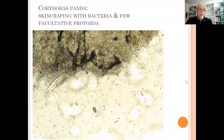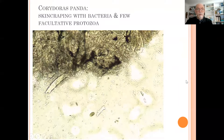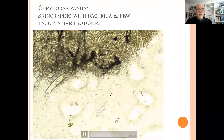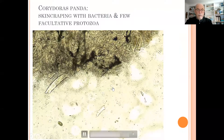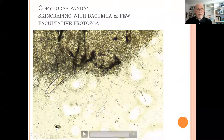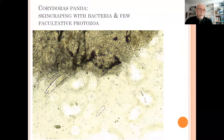We start first with the skin scraping. Here at 100x magnification, we see a few facultative parasites — that means they are not the cause of the problem. We see only one; I think it's a Tetrahymena, and here looks like a kind of Chilodonella, but only one of each. That means it's not a parasitic infection.